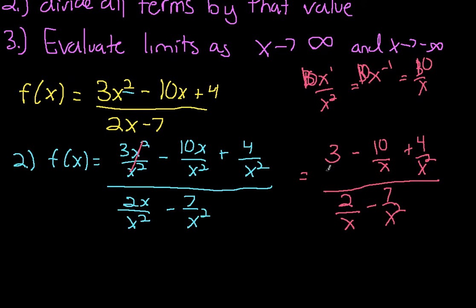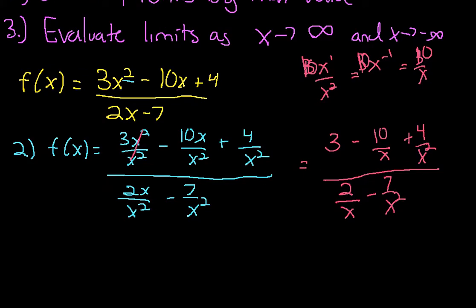Alright, so we've now divided all the terms by that value and now what we need to do is evaluate the limits. So any one of these terms here where you have an x in the denominator, go ahead and circle all of these, essentially approaches 0 as x gets larger and larger. Refer back to the last video if you don't fully understand why, but essentially as you divide by a bigger and bigger number, your value becomes smaller and smaller.